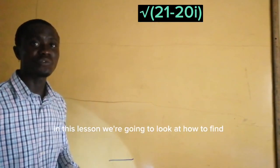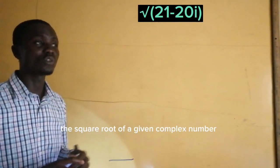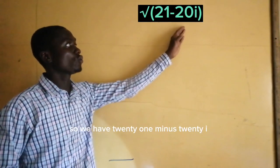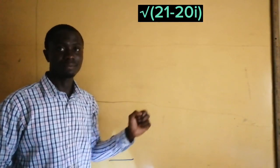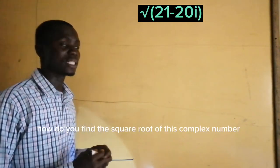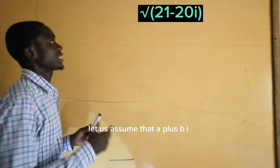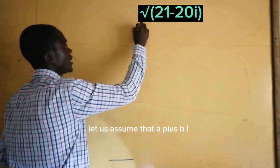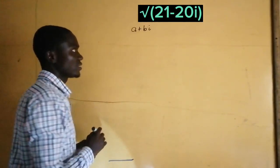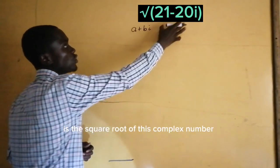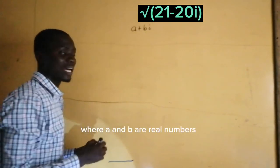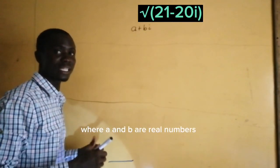In this lecture, we are going to look at how to find the square root of a given complex number. So we have 21 minus 20i. How do we find the square root of this complex number? Let us assume that a plus bi is the square root of this complex number, where a and b are real numbers.